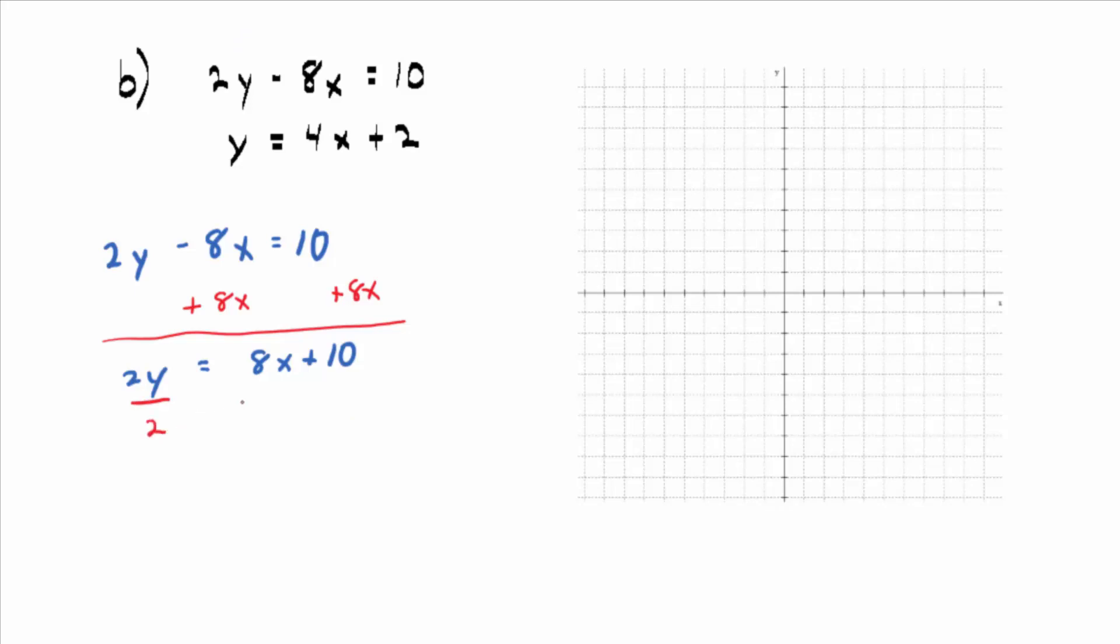Multiply by 1 half or divide by 2. Division distributes just like multiplication does, so you divide individually on the right side by 2. Both terms. So what does that give us? 4x plus 5.